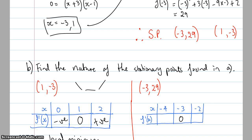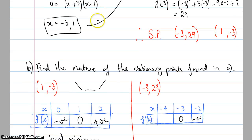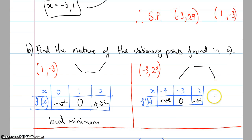When I substitute x = negative 4 into the derivative, I get 3 times 16, which is very positive, minus 24 minus 9 — it's still a positive number. So for this stationary point at (−3, 29), I have a positive gradient, then zero gradient, then a negative gradient. Therefore this is a local maximum.